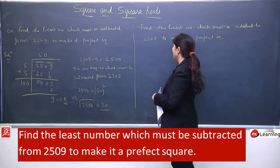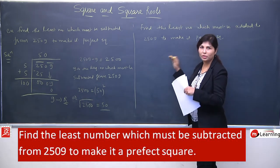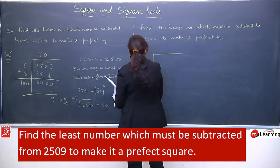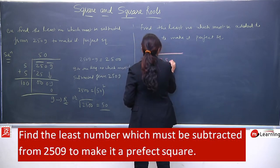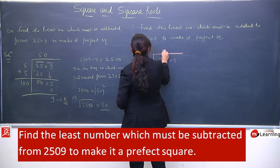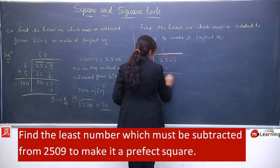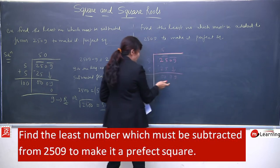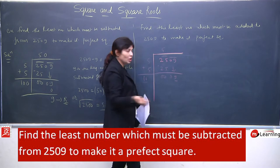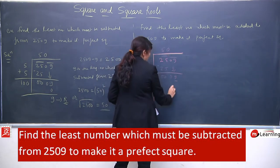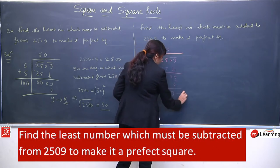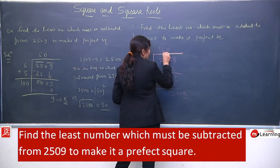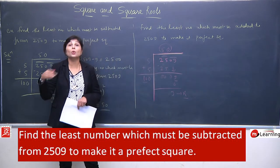Ab yahi question hum addition wala case lenge. So ab aapko yeh concept bilkul clear ho jaye ki hume kya karna hai. Uske liye hume long division tak toh solve karna hi hoga, kyunki koi option nahi humare paas. 5 is a 25, remainder 0, yahan 5 humne add kar diya, it will become 10. 09 humne copy kiya. Yeh 10 hai, yeh 9 hai, toh aage division nahi hoga. So hum ek 0 lagake - 9 will remain as a remainder.